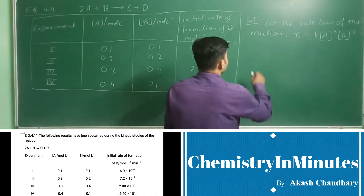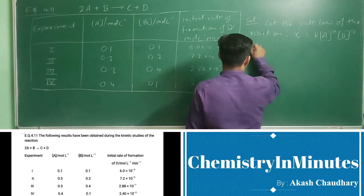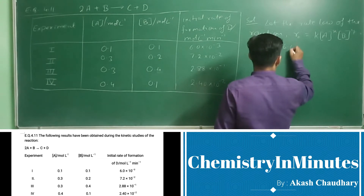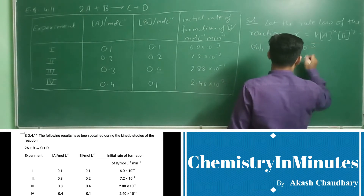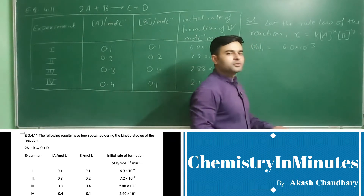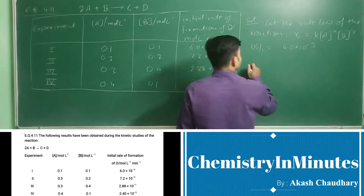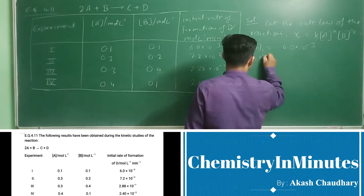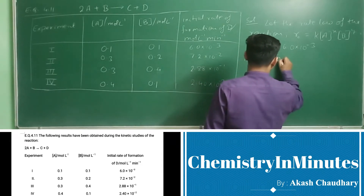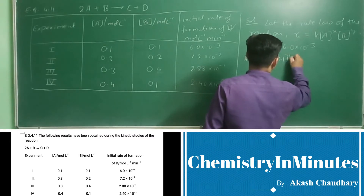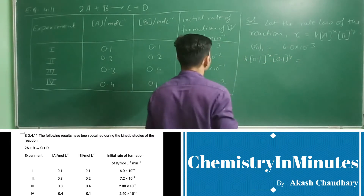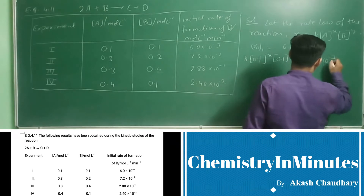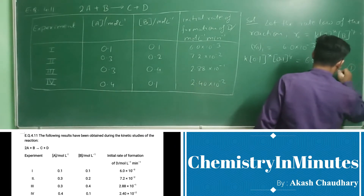Now R₀₁ equals 6.0 × 10⁻³. Putting the values of concentration in the rate law, we get k[A]^x [B]^y = 6.0 × 10⁻³. This will be our equation number 1.